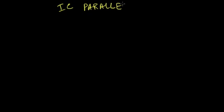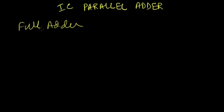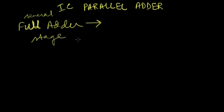Welcome to a tutorial on digital electronics. Today I'll be discussing IC parallel adders. For those who have gone through our tutorial on adders in the previous sections, the full adder is the improvement achieved over the half adder. Using the full adder we can add up to three bits, and now the question of multi-bit binary addition arises. We would use several full adder stages in order to achieve that.